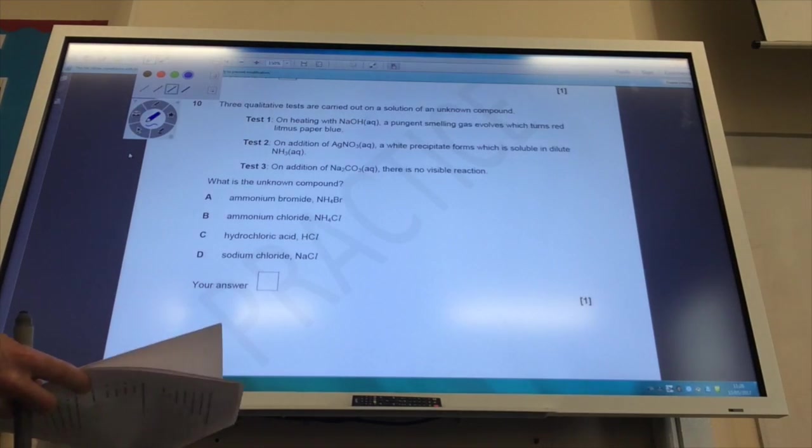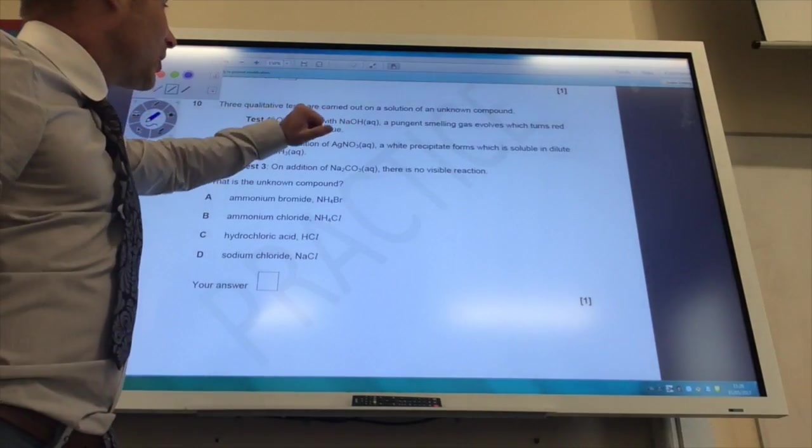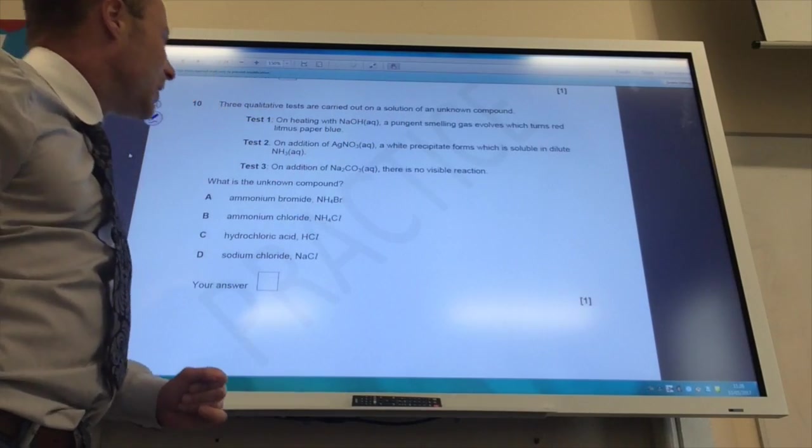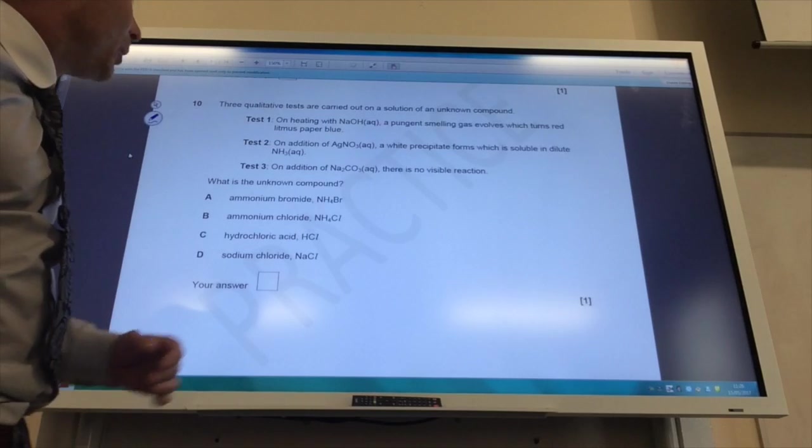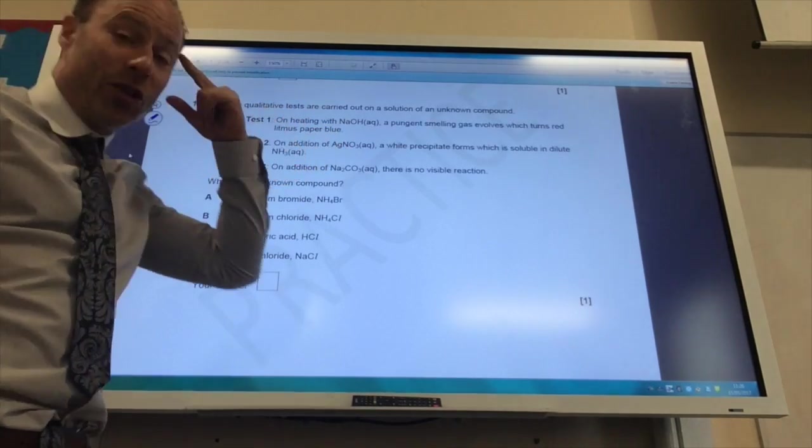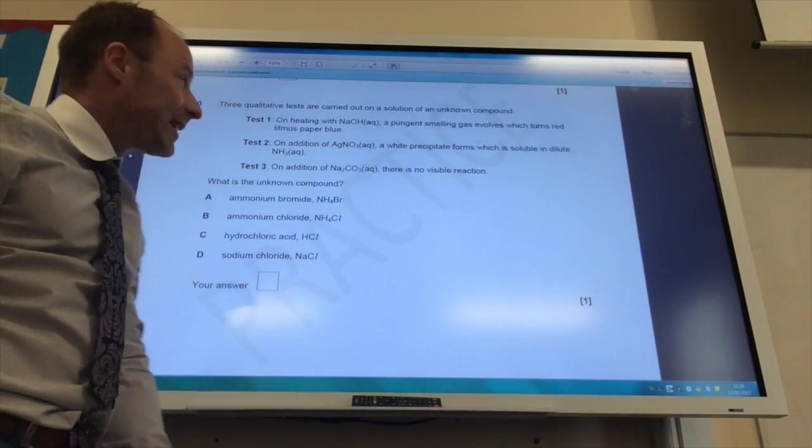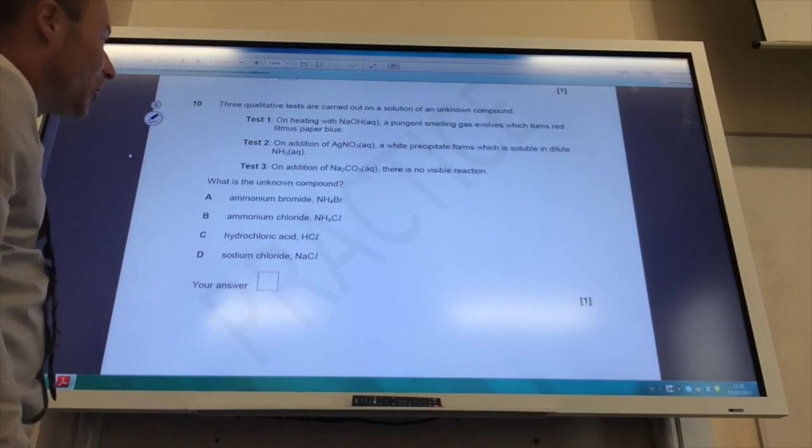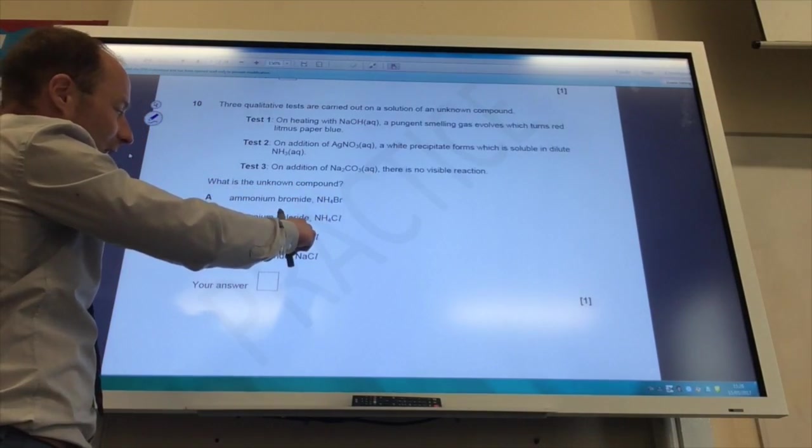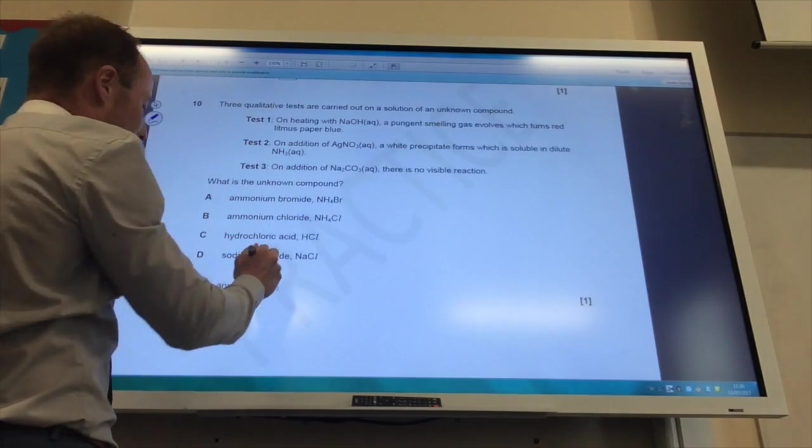Three qualitative tests are carried out on a solution of an unknown compound. You heat it with an alkali and you get a pungent smelling gas which turns red litmus paper blue. It gives you with silver nitrate a white precipitate, so you should be thinking chloride. Addition of sodium carbonate, no visual reaction, so it can't be acidic. White precipitate means it's got to be a chloride, so it's one of these. Can't be HCl because it's not acidic.